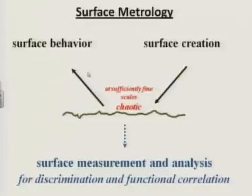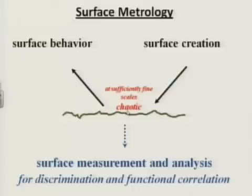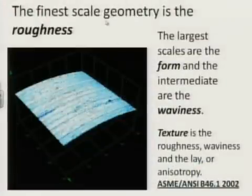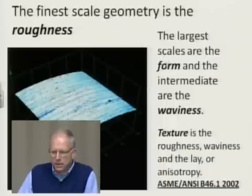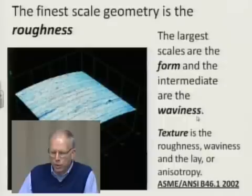One of the things that makes this interesting and challenging is that at the fine scales that are most often important in determining the behavior of the surface, the geometry tends to be chaotic, so that it is difficult to characterize by conventional Euclidean geometry. The finest scales in geometry are what we call the roughness. The largest scales are the form, and intermediate scales are the waviness.